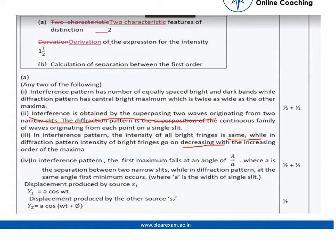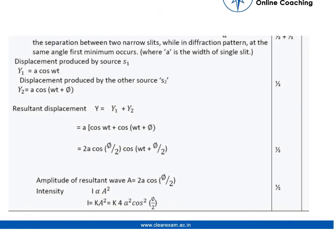Now for Young's double slit experiment. Let the displacement produced by source S1 be Y1 equals A cos ωt, and the displacement produced by the other source S2 be Y2 equals A cos (ωt + φ). The separation between two narrow slits, and in diffraction pattern at the same angle first minimum occurs. The displacement produced by sources S1 and S2 are as follows.